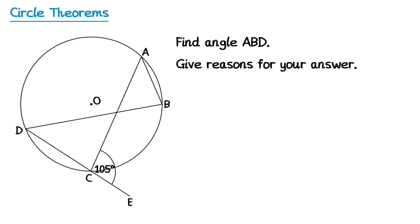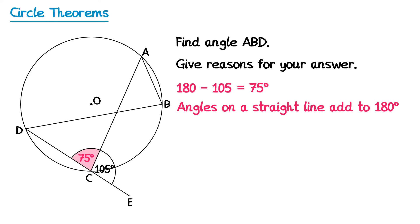In this question we've been asked to find the angle ABD, and we've also been asked to give reasons for our answers. So every time we find an angle we need to explain what we did — this will often involve writing down the theorem we've used. We're first going to find angle ACD. You should notice that angle ACD goes with angle ACE to make a straight line, so these two angles must add to 180. So 180 minus 105 equals 75, meaning this angle is 75 degrees. The reason is that angles on a straight line add up to 180 degrees.